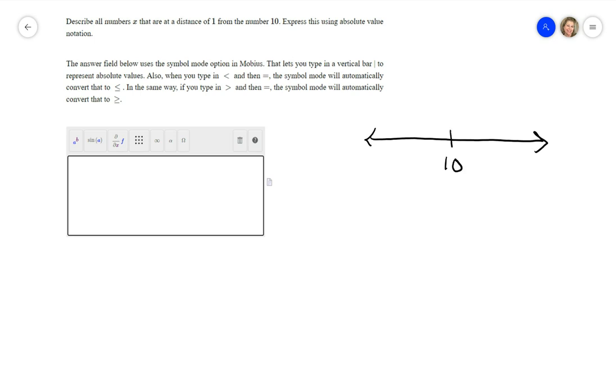Here's the number 10 on a number line. If you are 1 away from 10 to the right, that would be 11. And if you are 1 away from 10 to the left, that would be 9. So 10 to one place to the right is 11, one place to the left is 9.